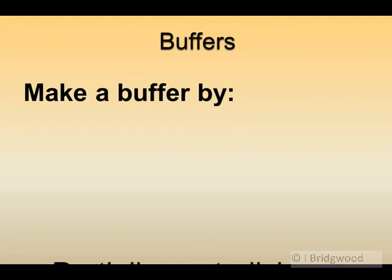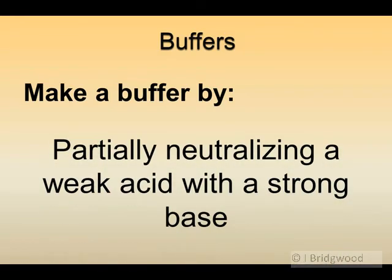Another way of making a buffer is by partial neutralization. We take ethanoic acid and react it with sodium hydroxide, producing some sodium ethanoate — the conjugate base. But we don't completely neutralize it, because that would get rid of all our weak acid HA. We want to partially neutralize it — half neutralize it possibly — so that we have a reasonable concentration of HA and a similar concentration of A-.